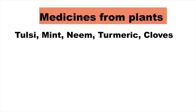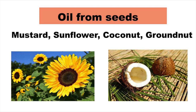Certain plants can be used for medicines, like tulsi, mint, neem, turmeric and cloves. We can get oil from the seeds of plants like mustard, sunflower, coconut and groundnut.